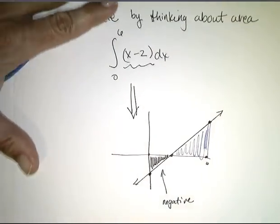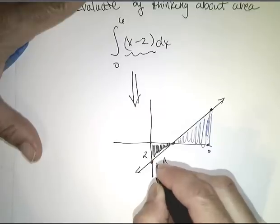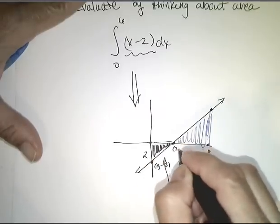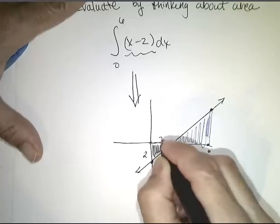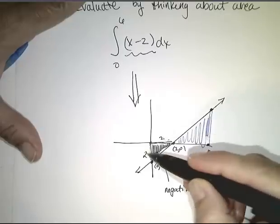Well, I can resort now to geometry that I know. So, this distance right here is two. Remember, this is the point zero, negative two. And this is the point two, zero. So, this distance is two. So, the area of this triangle is base times height, four, divided by two, which is two.